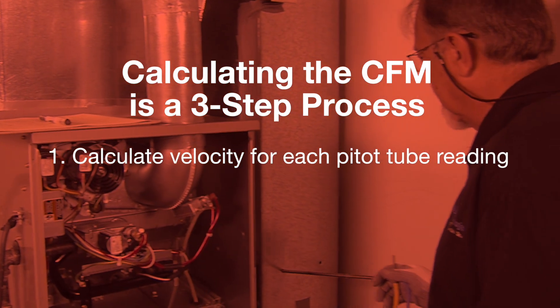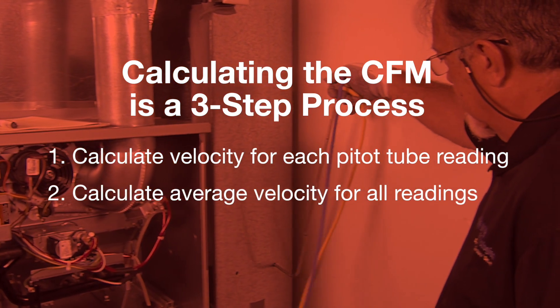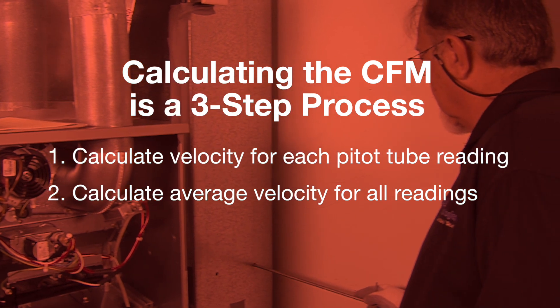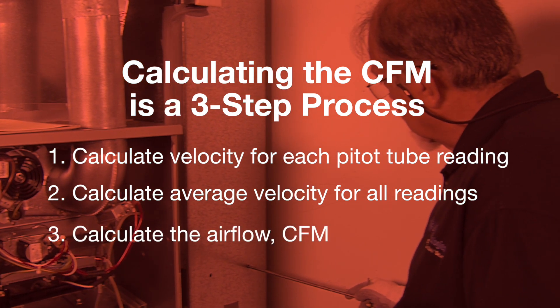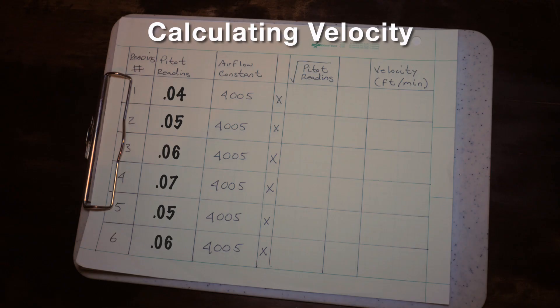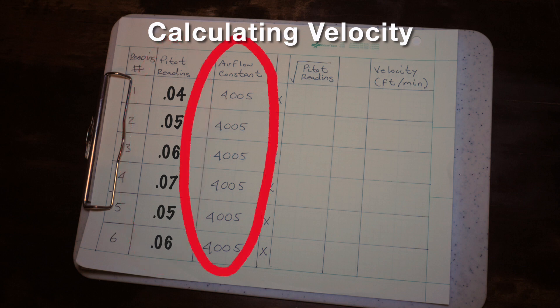Calculate the velocity for each individual pitot tube reading. Calculate the average velocity for all the readings. Then use that average to calculate the airflow or CFM. To calculate individual velocities, take the square root of your pitot tube reading and multiply it by the airflow constant. The airflow constant is 4005 and can be found in the air properties and measurement materials.